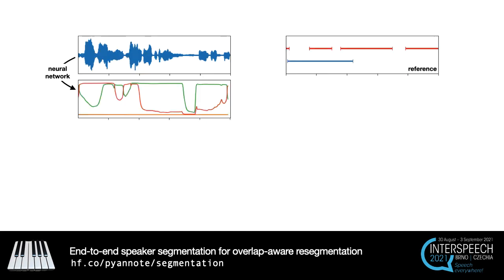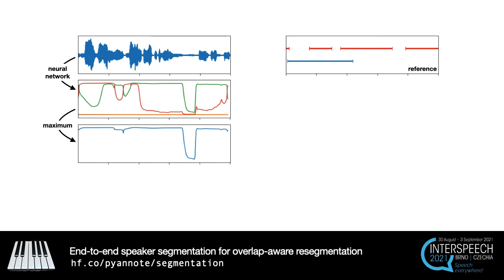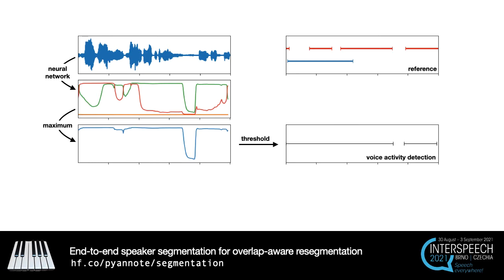Once the model is trained, it can be used to address multiple tasks, all related to speaker diarization. First, by taking the maximum activation score at each time step, followed by thresholding, the model can be used for voice activity detection.